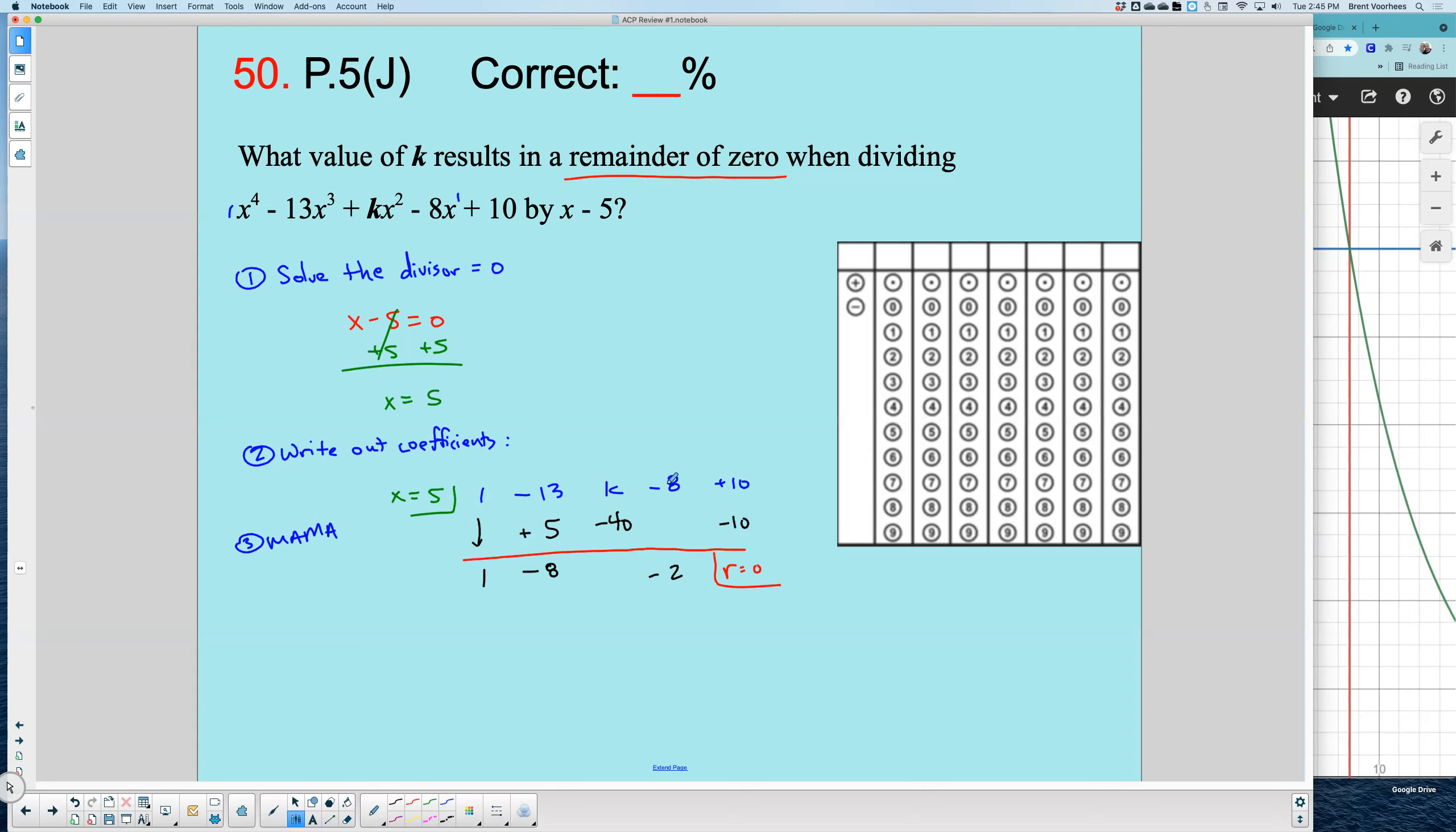Now that means -8 plus or minus some number gives me -2. This would have to be a positive 6. -8 plus 6 would give me -2. So now I know that this number must be a positive 6.